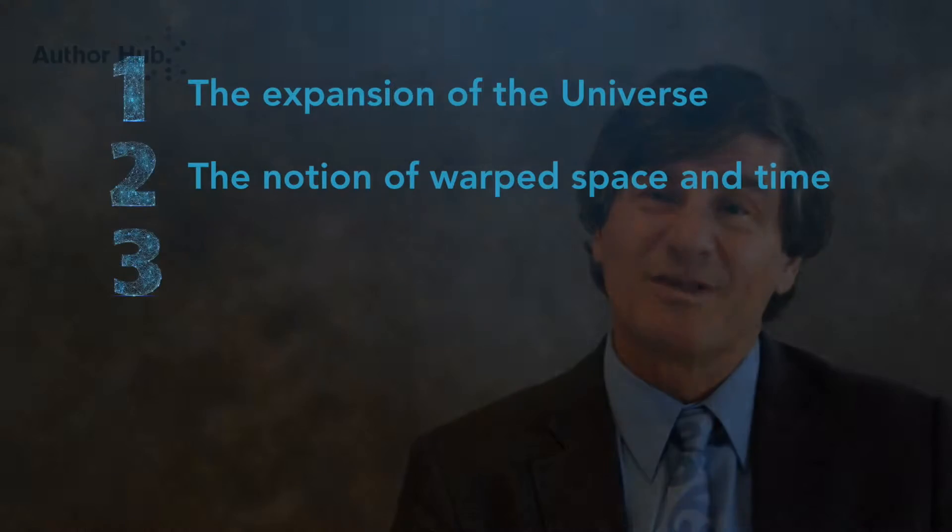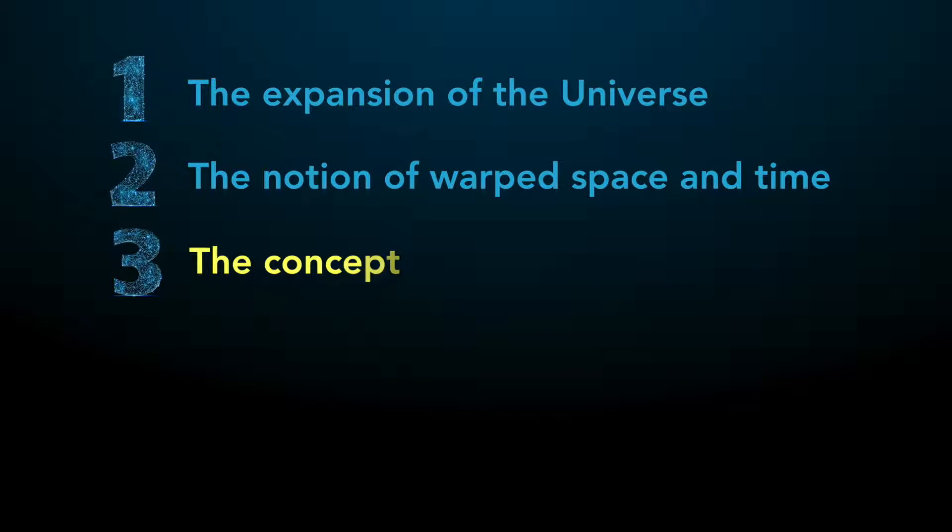Many students have trouble with the concept of stellar evolution — the fact that stars actually have lives: they're born, they live, they die, and there are distinct physical processes going on at each stage. Because over a human lifetime you just look at the Sun and it doesn't look like it's changing at all. But over millions or even billions of years, stars do change.